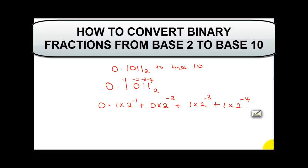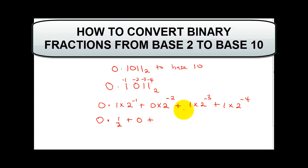Having done that: 1 times 2 raised to the power minus 1 is one-half. The zero term gives us zero since zero multiplied by anything is zero. Then 2 raised to the power minus 3 is 1 over 8, and 2 raised to the power minus 4 gives us 1 over 16.